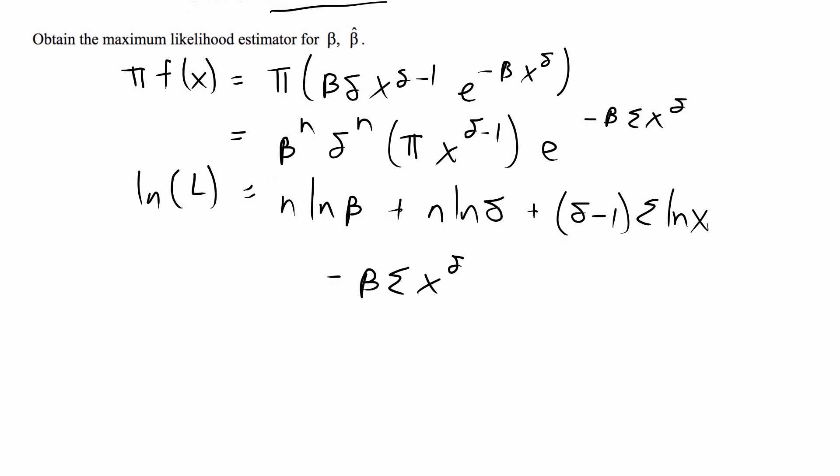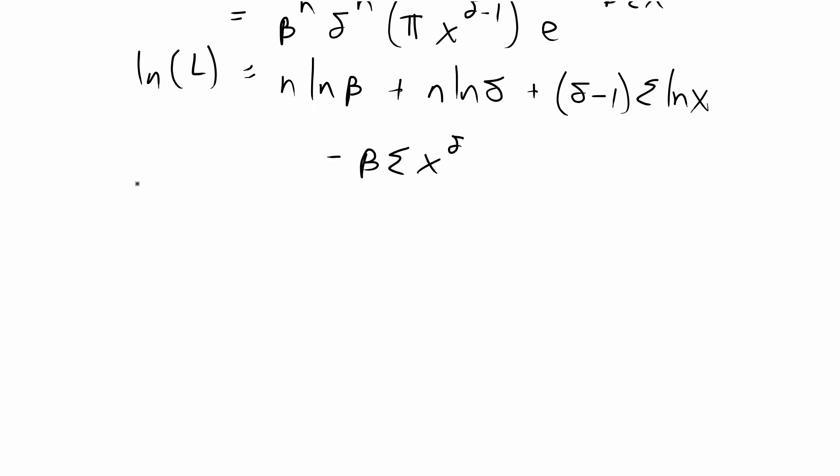Alright, and then our next step is to take the partial derivative on both sides with respect to the population parameter we're trying to estimate, so that's beta in this case. For this expression we only care about taking the partial derivative with respect to beta, so anything that doesn't have beta is going to cancel out as zero basically.